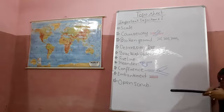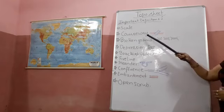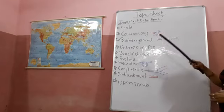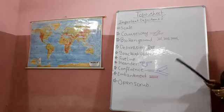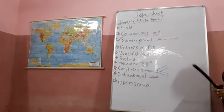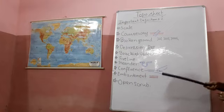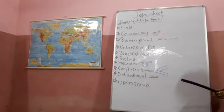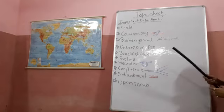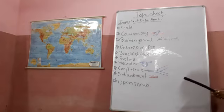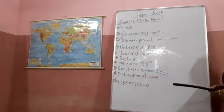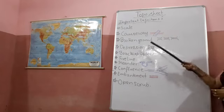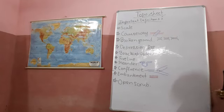Now next, I will start with Causeway. If you see in your toposheet, in many places causeway is written. So what is the definition of causeway? It is a raised road across a minor stream or low-lying marshy area where water is accumulated during the rainy season. But in other seasons when there is no rain, these areas are used for transportation purposes. That is called a causeway.